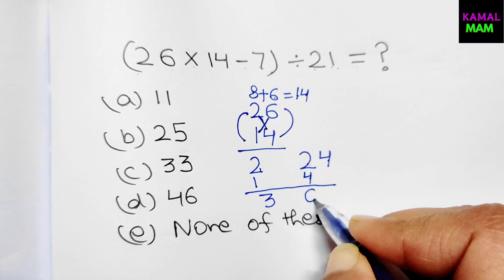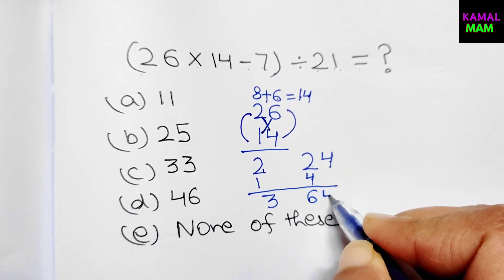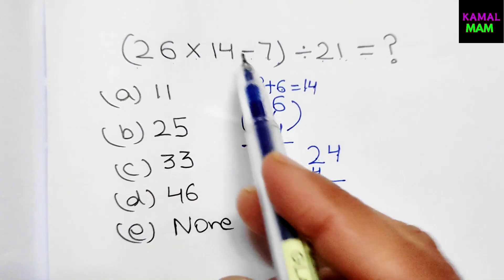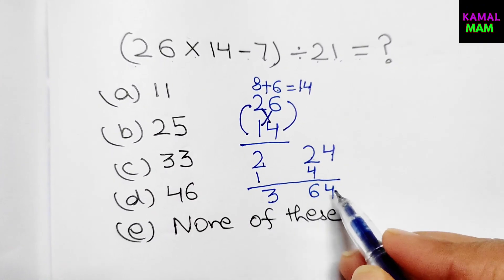2 plus 1 we get 3 here, and 2 plus 4 we get 6, and here it's a 4. So our answer for 26 into 14 is 364.